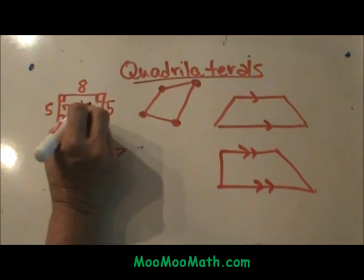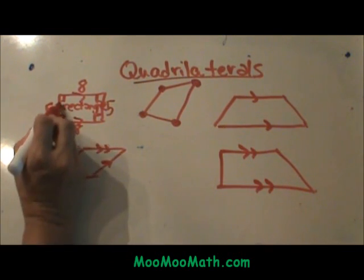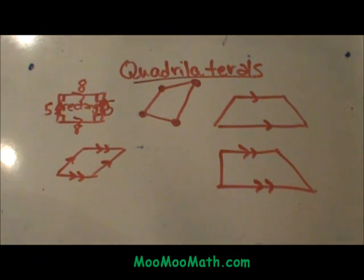A rectangle is also a parallelogram, so these sides are parallel and these sides are parallel. So that is a parallelogram and that is actually a rectangle.